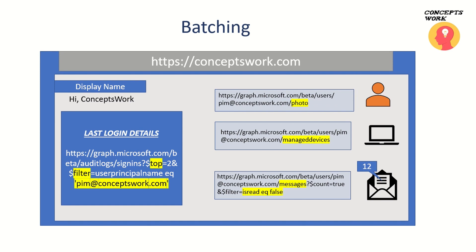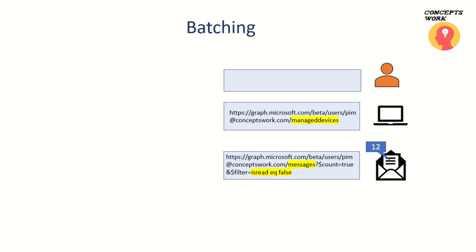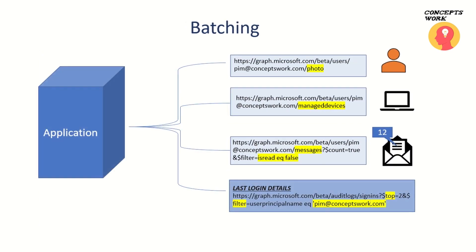In a typical application you may be making four different queries. But consider a scenario wherein I show you a single method where you can include all these requests in one particular request sent to the Microsoft Graph API, and in the response you will get all the details you are looking for.